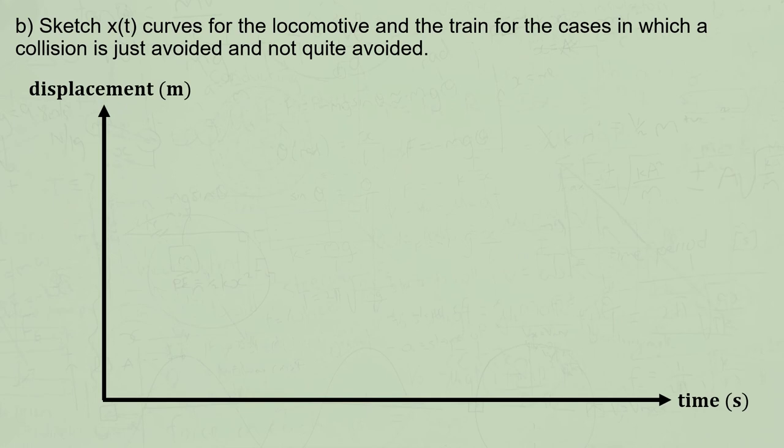Part B asks for a sketch of displacement time graphs for the train and the locomotive. Please remember that your graph, or your teacher's, might be different if you chose the origin to be somewhere else. And wherever you choose it to be, it should be stated clearly in your solution. When sketching a graph, I always start with what we know, which in this case is that the train and the locomotive will almost collide after 36.9 seconds.